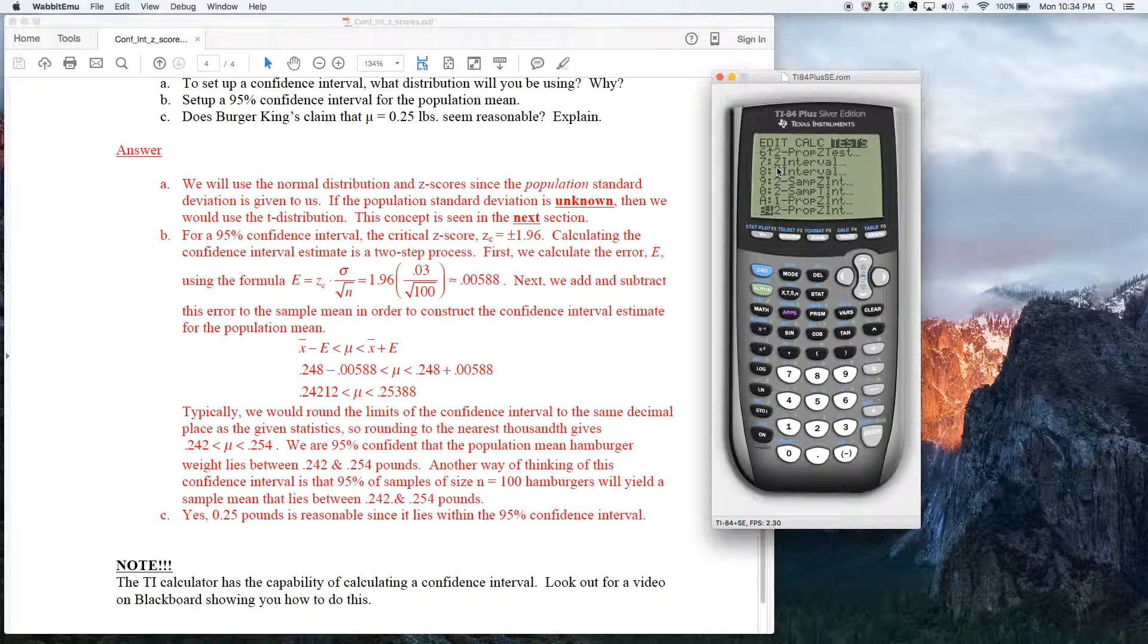And notice number seven says z interval. That's a confidence interval using z scores. This other option here, number eight, is a confidence interval using t scores. It's using the t distribution. We're actually going to be using the normal distribution.